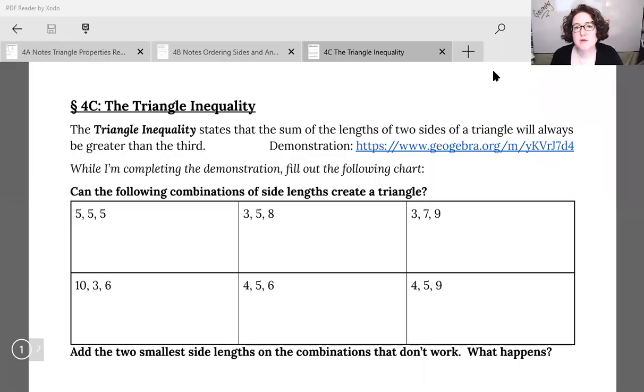In today's lesson, we're going to do a demonstration together. We're going to look at a GeoGebra sketch which is going to let us test out the idea of what sides can we actually use to make a triangle. You'd think you can draw any three sides, connect them and make a triangle, but there's actually requirements for the lengths.